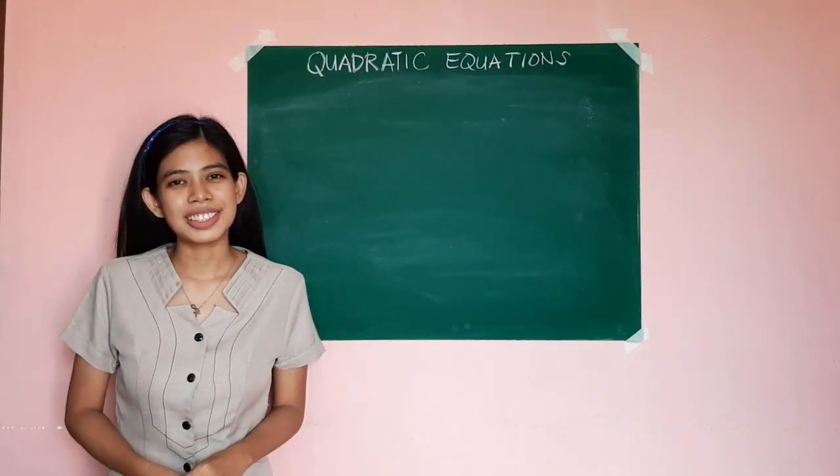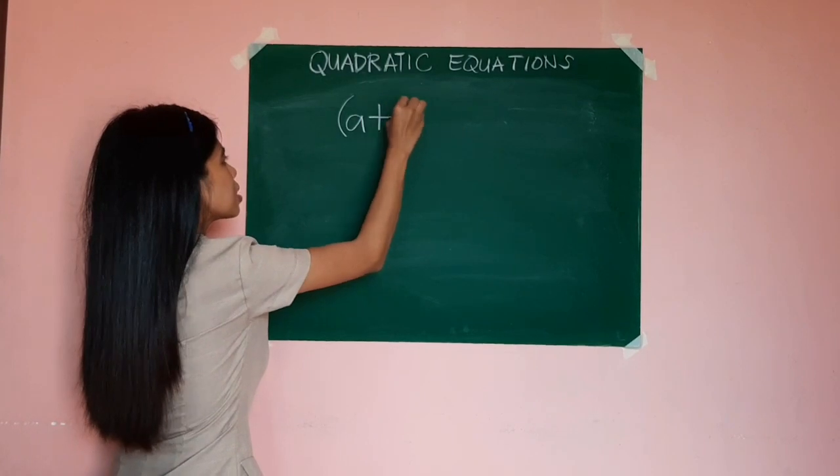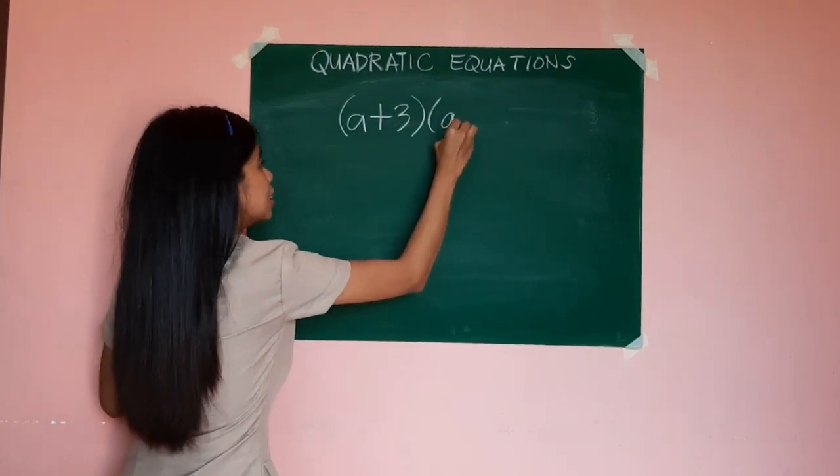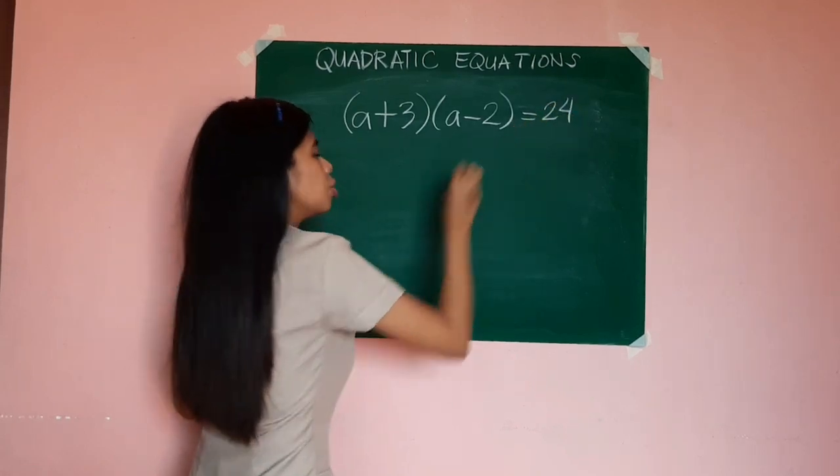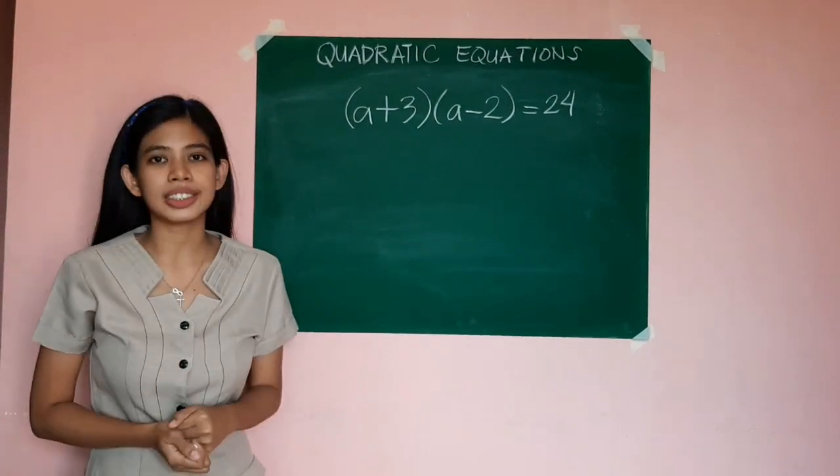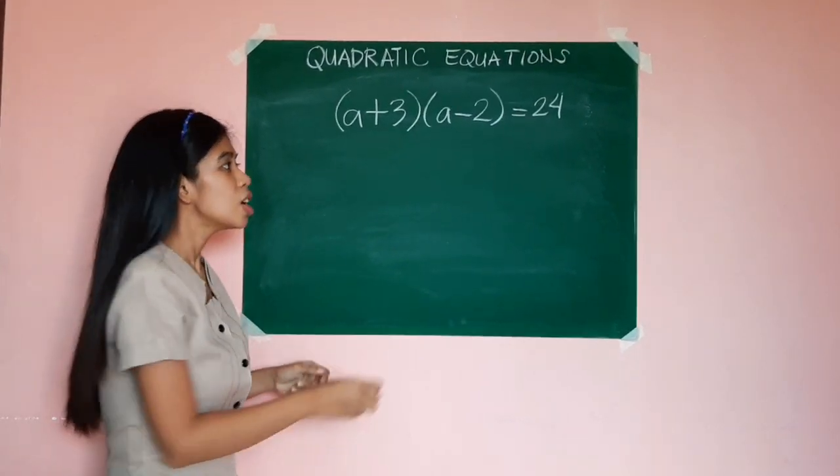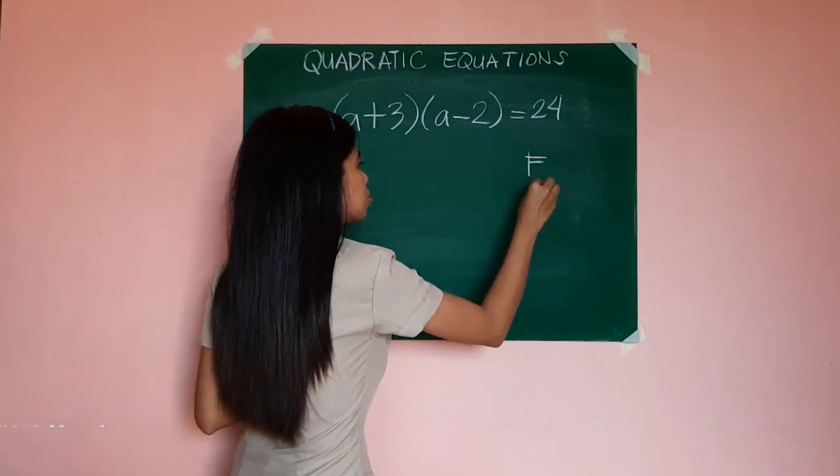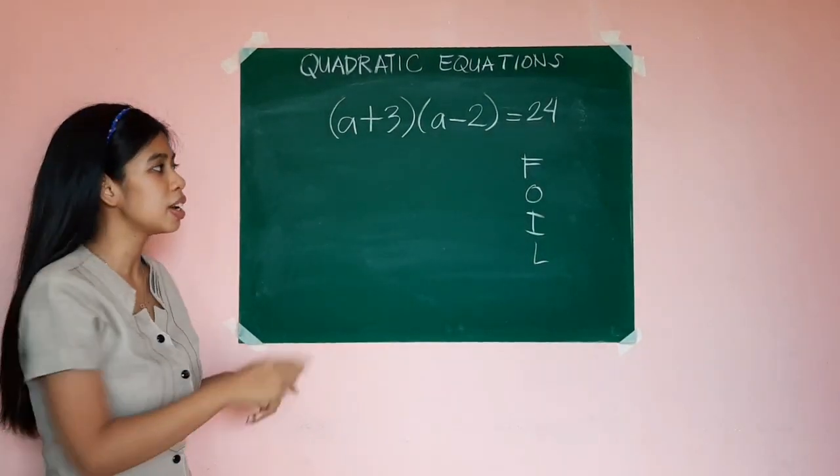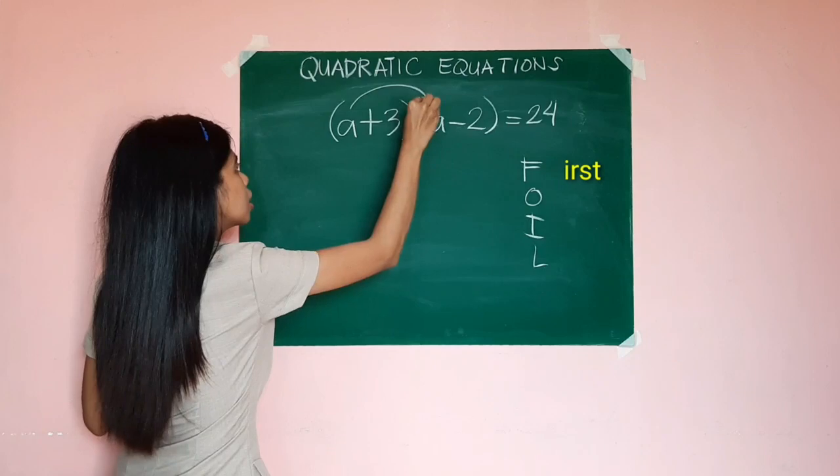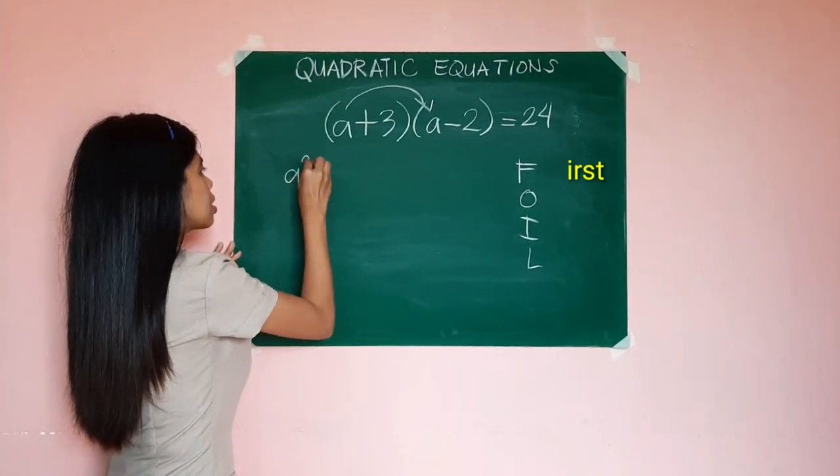Let us have the last example. Suppose you were given (a + 3)(a - 2) = 24. Let us try to change this into a quadratic equation written in standard form. If you could still recall the FOIL method, we are going to multiply the first terms first. So that would be a times a, so that's a².